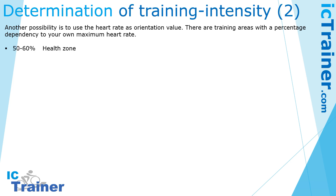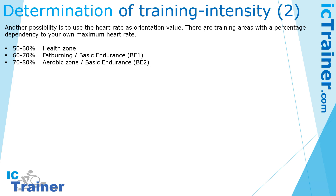Between 50 and 60 percent of your maximum heart rate you are in the health zone. Then there is the fat burning zone, the basic endurance PE1 zone, then the aerobic zone — basic endurance PE2 — then the anaerobic zone, the development zone.